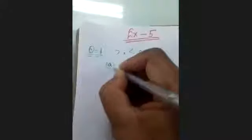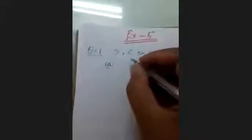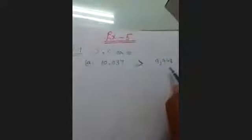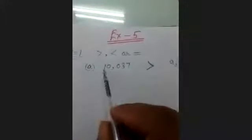First question, Part A: compare 10,037 and 9,998. The first number is 10,037 and the second number is 9,998. We compare according to place values — 10,000 is greater than 9,000. So 10,037 is greater than 9,998.